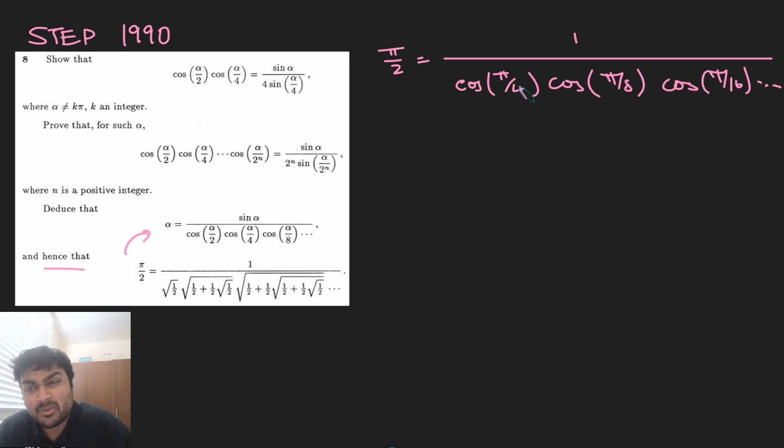Now we need to work out what these are. Well, cosine of pi by 4 is nice. That's just 1 over root 2. But what about cosine pi by 8, cosine pi by 16, and so on? What do those equal? Well, to work those out, we can just use the double angle formulae again.